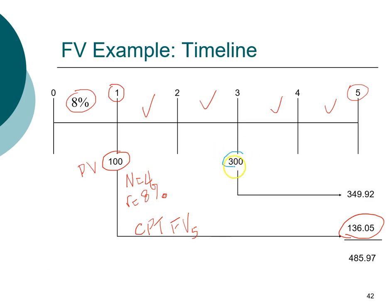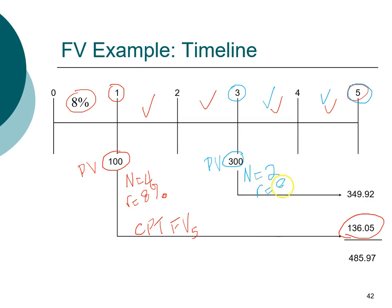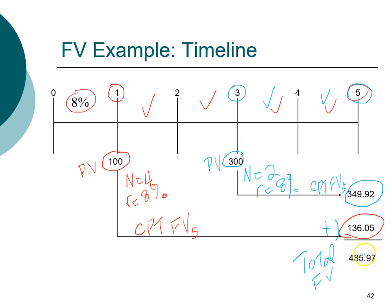Next, let's take a look at the $300 deposited in year three. We leave that until the end of year five. Between year three and year five there are two years (five minus three equals two). So the present value is $300 invested for two years at 8%, and the future value for year five turns out to be $349.92. When you add these two together, the total future value is $485.97.